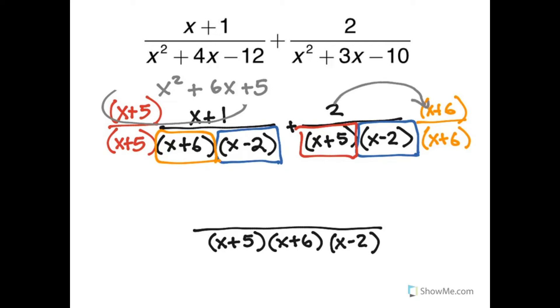The second one, we need to use the distributive property. It's 2 times x plus 6. So that's going to give me 2x plus 12. Now, I can combine like terms.